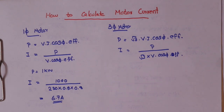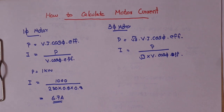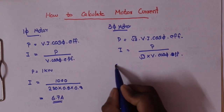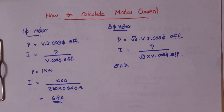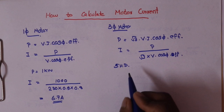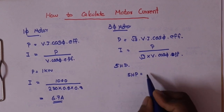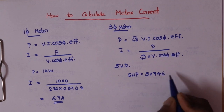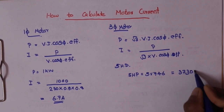Let's work through an example. We take a 5HP three-phase motor. Because the motor rating is in HP, we convert: 1HP equals 746W, so 5HP equals 5 times 746, which equals 3730W.